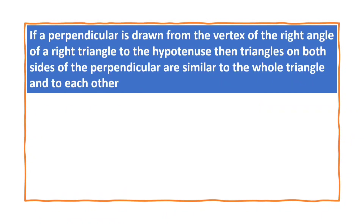If a perpendicular is drawn from the vertex of the right triangle to the hypotenuse, then the triangles on both sides of the perpendicular are similar to the whole triangle and to each other.